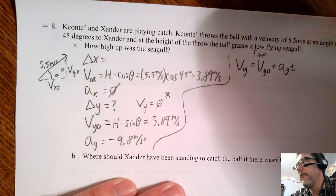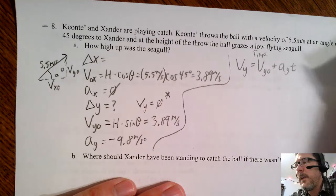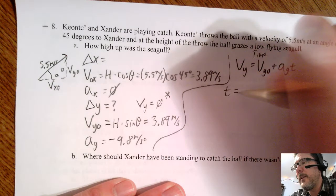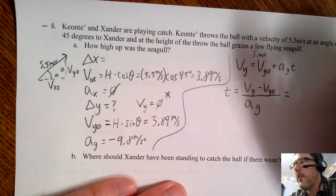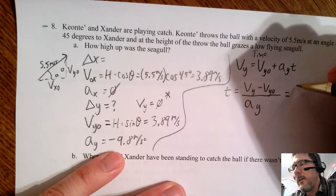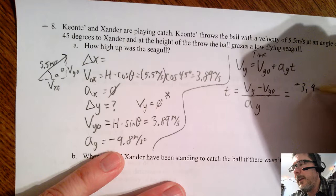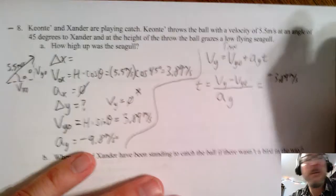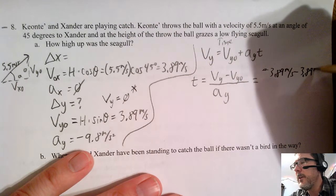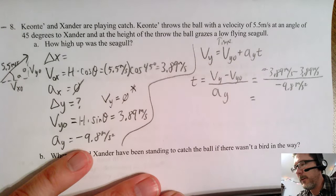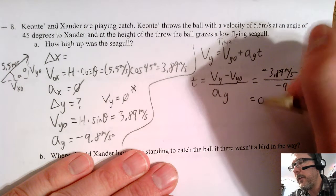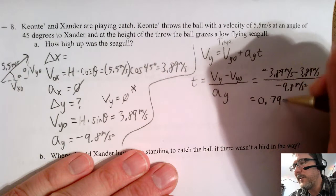Now I use δy = vy₀·t + ½·ay·t² to find the height. With time = 0.4 seconds, and all other variables known, I can solve for δy.